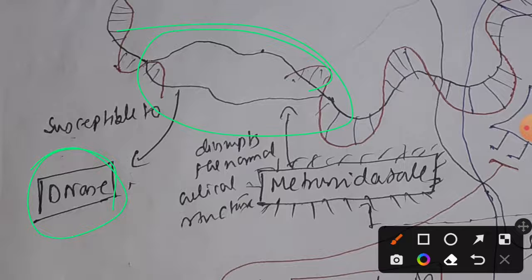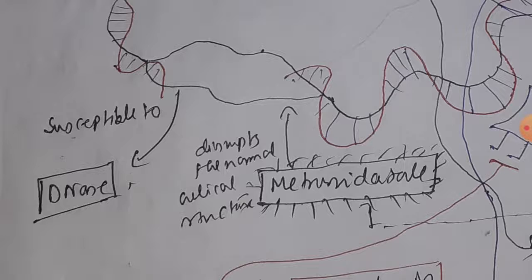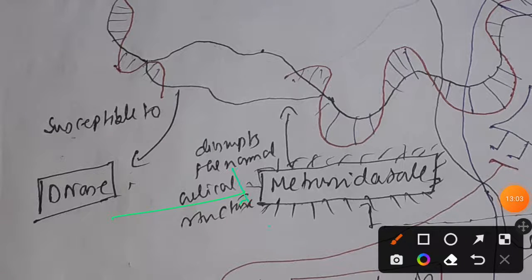This makes metronidazole bactericidal. We can use metronidazole for both gram-negative and gram-positive bacteria. For example, bacterial vaginosis or Helicobacter pylori infections responsible for gastric or duodenal ulcers can be treated with metronidazole. However, metronidazole is predominantly used for antiprotozoal treatment — for example, amoebiasis caused by Entamoeba histolytica or giardiasis caused by Giardia lamblia.